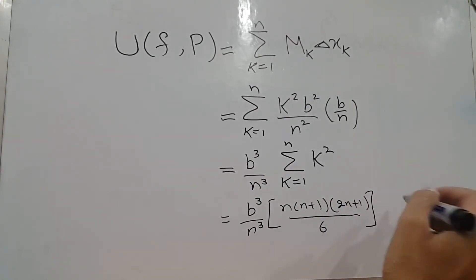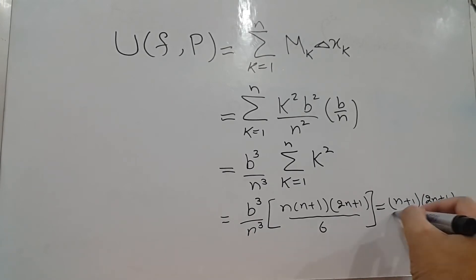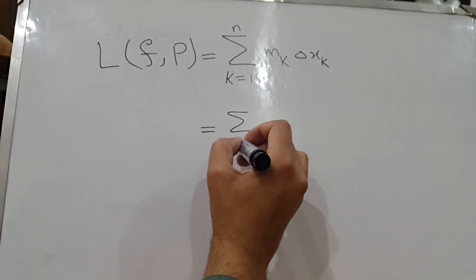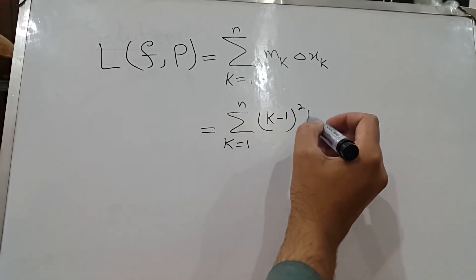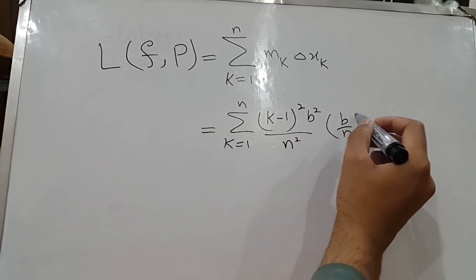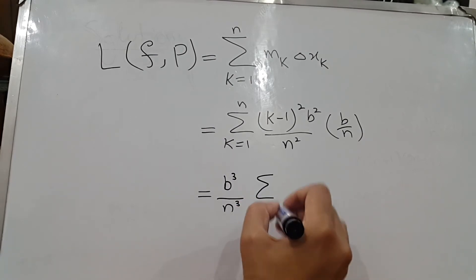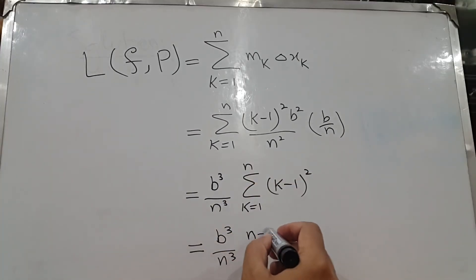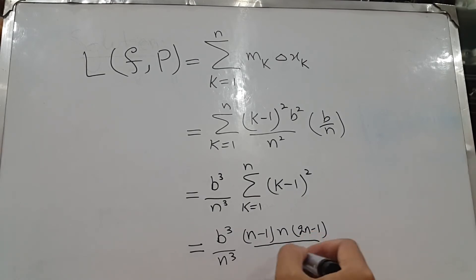The lower sum L(P, f) is the summation from k=1 to n of (k−1)²b²/n² · (b/n). This equals (b³/n³) · Σ_{k=1}^{n} (k−1)², which evaluates using the formula to b³(n−1)n(2n−1) / (6n³), simplifying to b³(n−1)(2n−1) / (6n²).